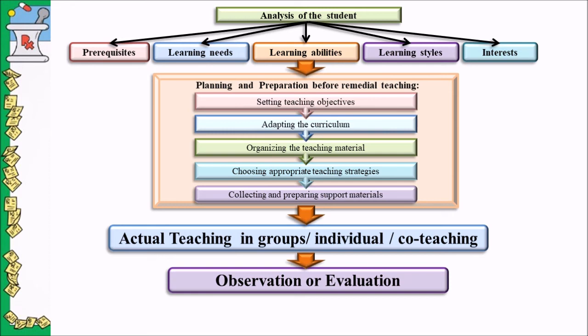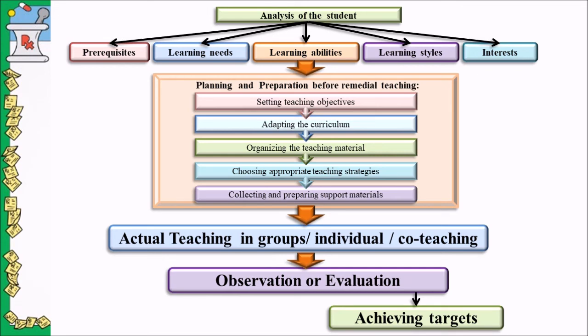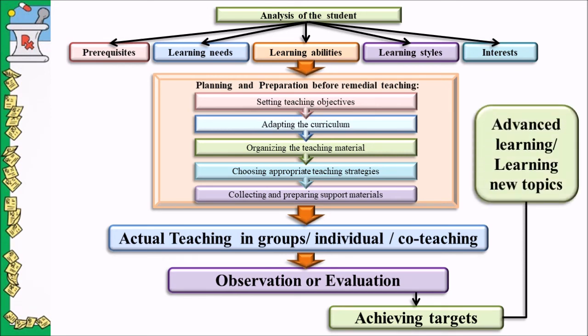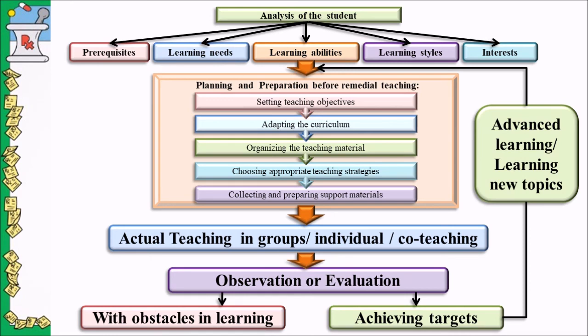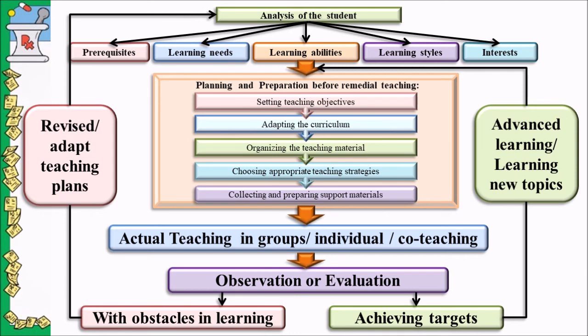A good rapport helps pupils understand the effect of their behavior on others and themselves. Along with observation, teachers need to use evaluation and assessment so remedial teachers can know the learning progress of the student. If the program successfully achieves target goals, the remedial teacher proceeds to advanced or new learning topics, leading to new planning and preparation. However, if the student shows obstacles in learning, the remedial teacher goes back to check for errors in the student analysis and revises the teaching plan accordingly.